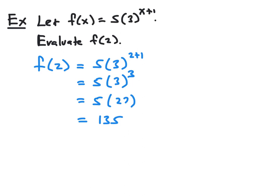So f of 2 is equal to 135. If we take the x value of 2 and put it into f of x equals 5 times 3 raised to the x plus 1 power, the output is 135.